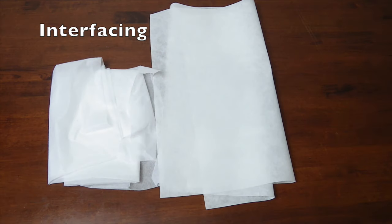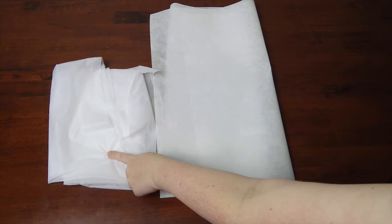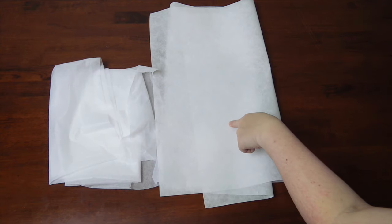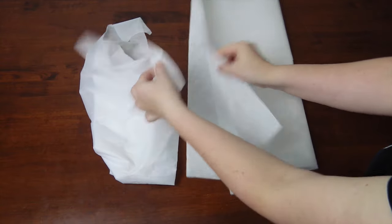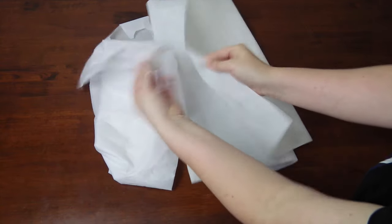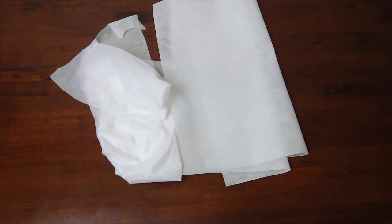Next up, we have interfacing. This is probably the most common stabilization material used within sewing. It comes in a range of different thicknesses, from lightweight all the way through to heavyweight. As you can see here, the heavyweight interfacing is much more rigid than the thin interfacing. But it might not work as well if you're using a lightweight fabric, so keep that in mind when making your selection.